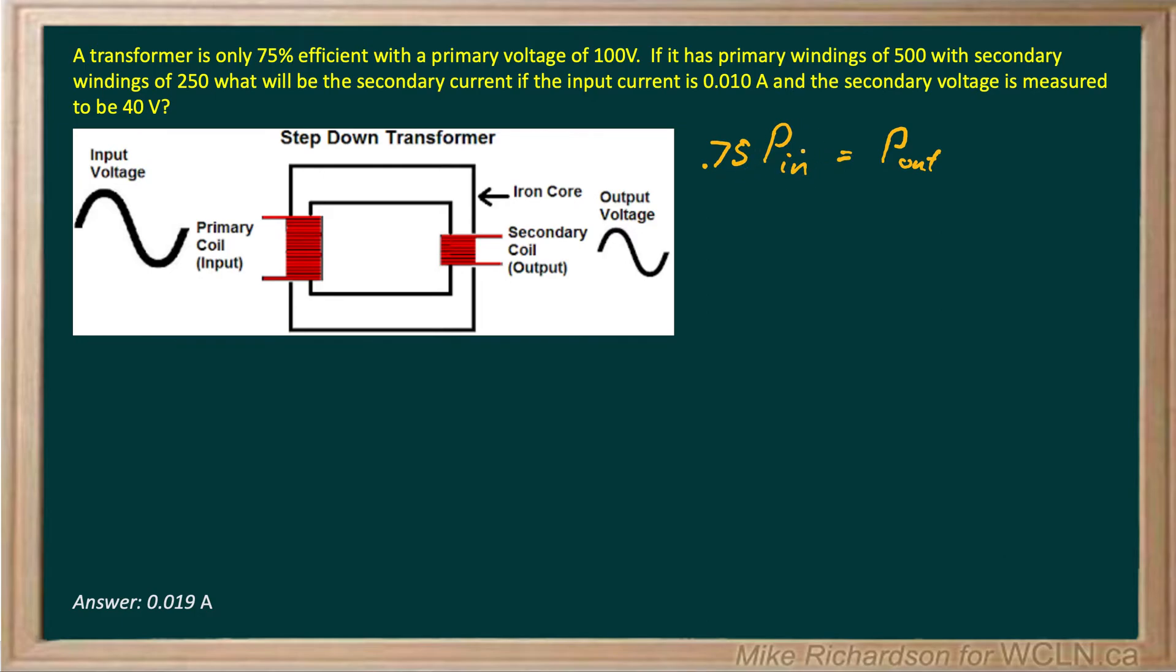So I'm going to multiply P_in by 0.75. Now my input power is just voltage times current, so it's going to be my primary voltage times my primary current. And my output power is the secondary voltage multiplied by the secondary current.